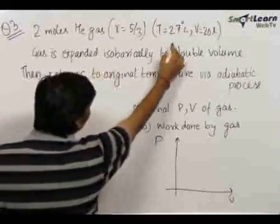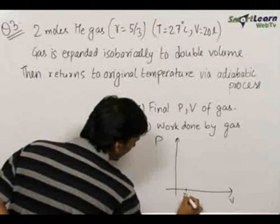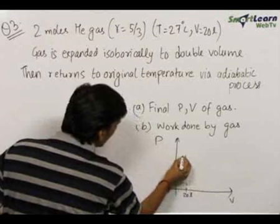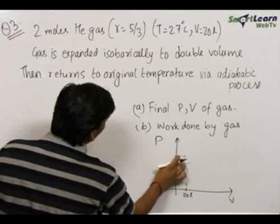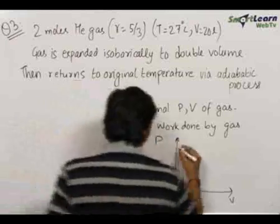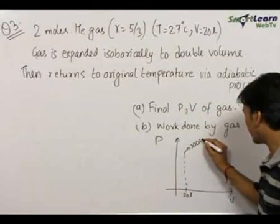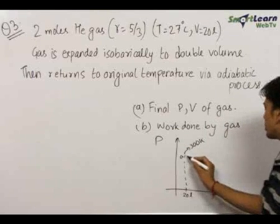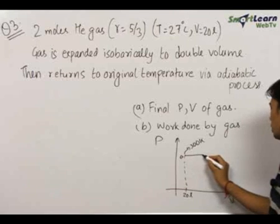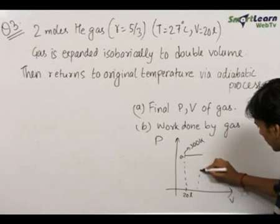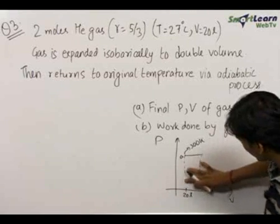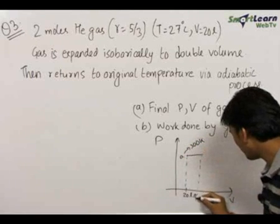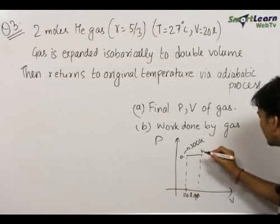Initially, 2 moles of helium gas was at a temperature of 300 Kelvin and 20 liters. Initially the gas was at this point with a temperature of 300 Kelvin — let this be point A. Under constant pressure it doubles its volume, going to a point where the volume is doubled. The volume at this point will be 40 liters — let this be point B.